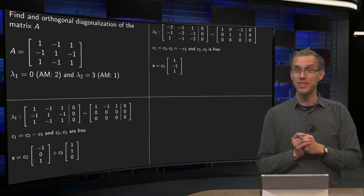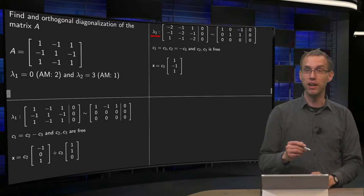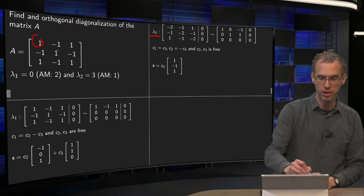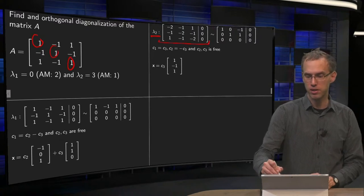Then we move on to the second eigenvalue, lambda 2 equals 3. So we compute A minus 3 times the identity matrix, so minus 2 here, minus 2 here, minus 2 here, and we augment with zeros, then we get this augmented matrix.